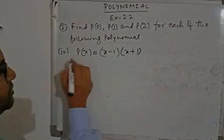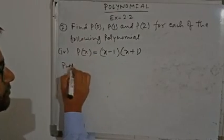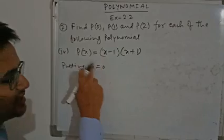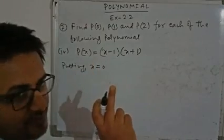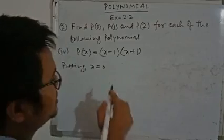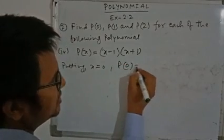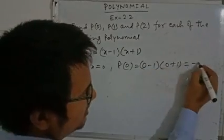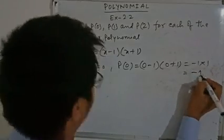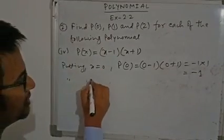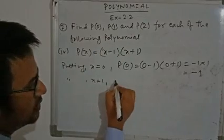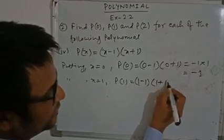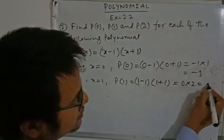Here also, P(0) means putting X equals 0, because we have to replace X by 0. So P(0) equals (0 minus 1)(0 plus 1), which is (−1)(1) equals −1. Now putting X equals 1: P(1) equals (1 minus 1)(1 plus 1), so 0 into 2 equals 0.